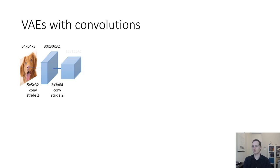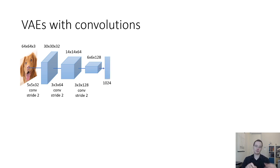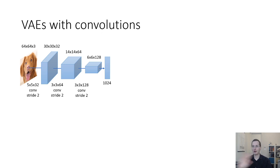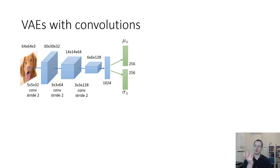Then a 3 by 3 by 64 conv gives a 14 by 14 by 64 response map, followed by a 3 by 3 by 128 conv giving a 6 by 6 by 128 response map. You flatten it and pass through a fully connected layer with 1024 units — this is just a sample architecture. Unlike a standard convolutional autoencoder, now you have one fully connected layer that outputs mu and another that outputs sigma, each with dimensionality 256, which is the number of dimensions for the hidden code.